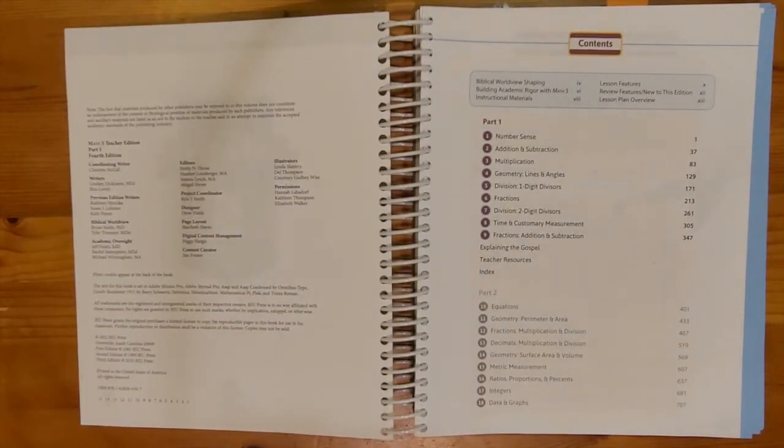At the beginning of this book you will find a table of contents page. Some of the chapters in Math 5 will be covering multiplication, division, fractions, decimals, even a chapter on ratios, proportions, and percents, and an introduction to integers.